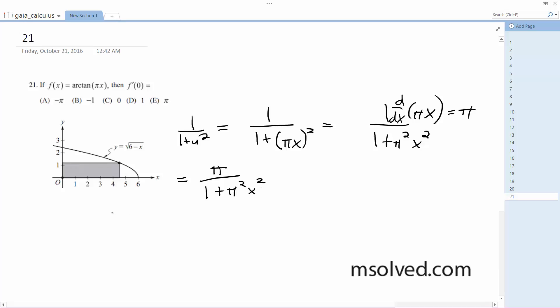But then we want f prime of 0, which is equal to pi over 1 plus pi squared times 0. And what we end up with is pi over 1, which is just pi. And that's letter E. That's it.